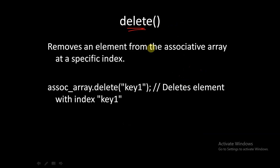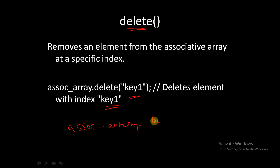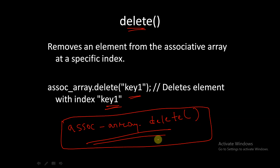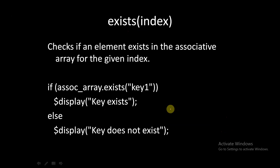The `.delete` method is used to remove an element from the associative array at a specific index. For example, `array_name.delete(key1)` will delete the element with index `key1`. If you do not provide any index — writing simply `assoc_array.delete` — the entire associative array will be deleted.